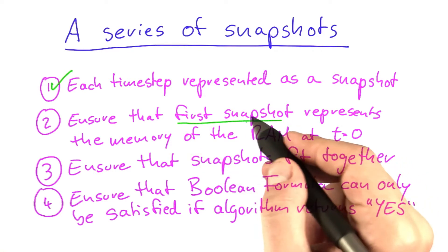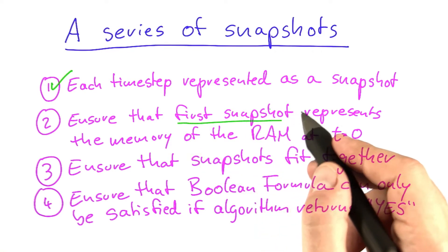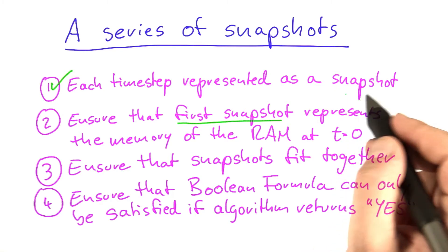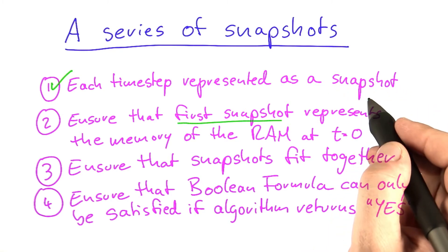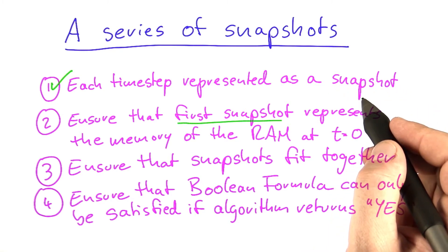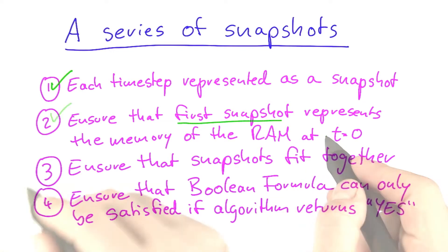So given the way that a Boolean formula is written, all we have to ensure is that we enforce the variables for the first snapshot to represent that state that we already know. But we can force that.